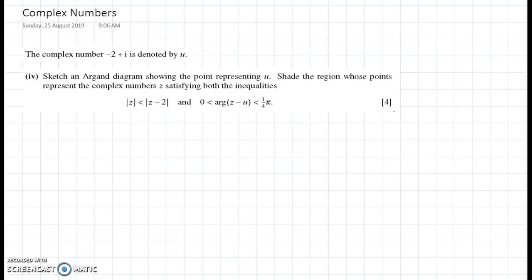So I've been sent this question to have a go at, it's part four of a bigger question, but this is the information that we need for this particular part. We've got a complex number minus two plus i denoted by u. So there's our starting point.